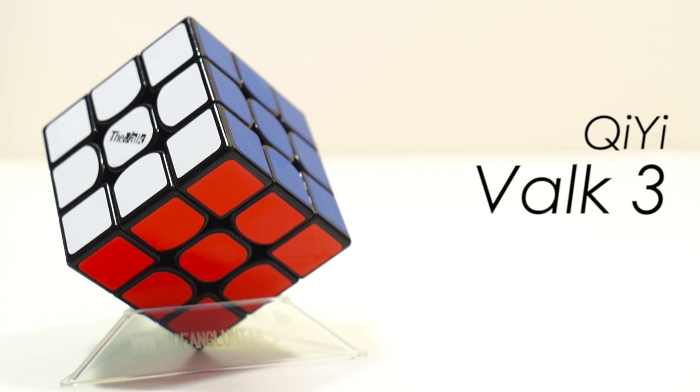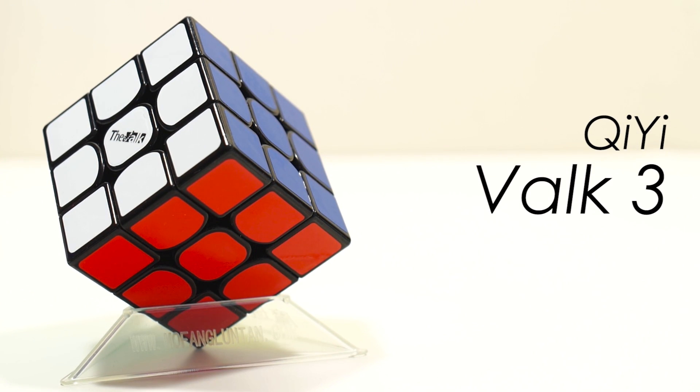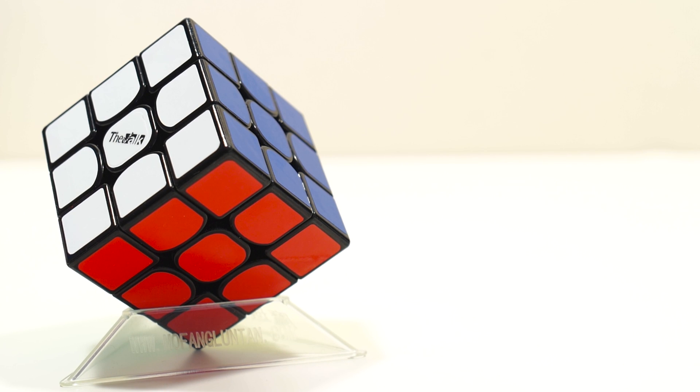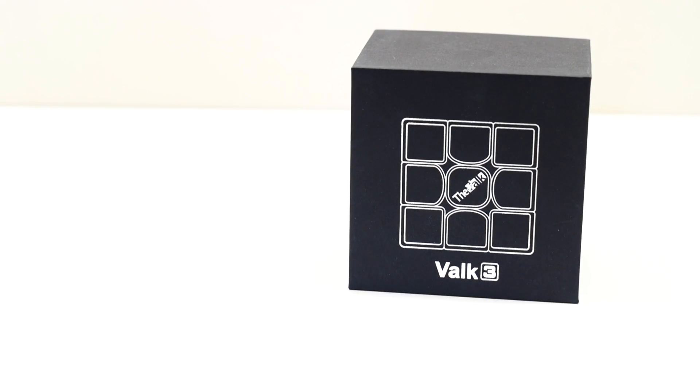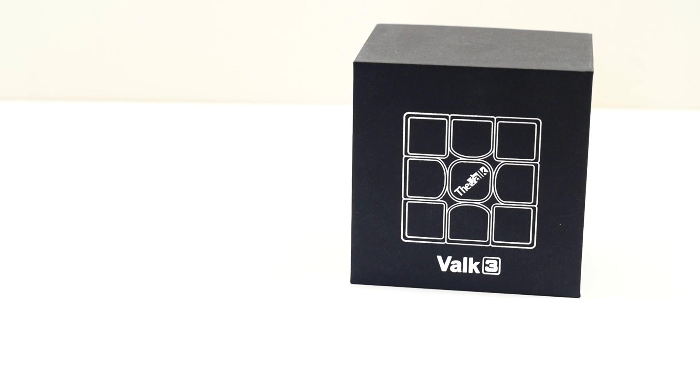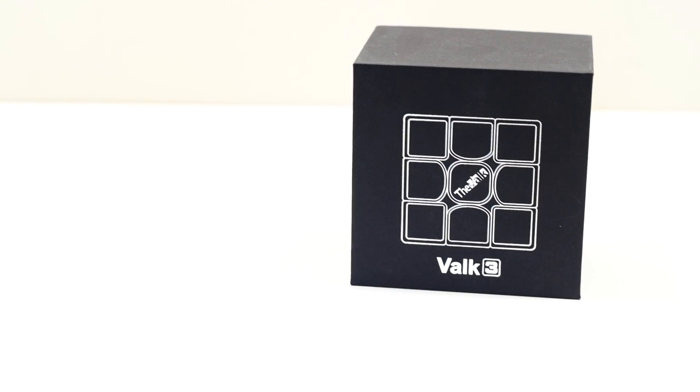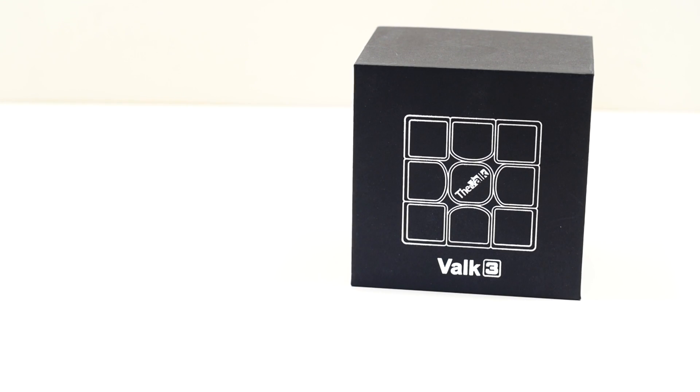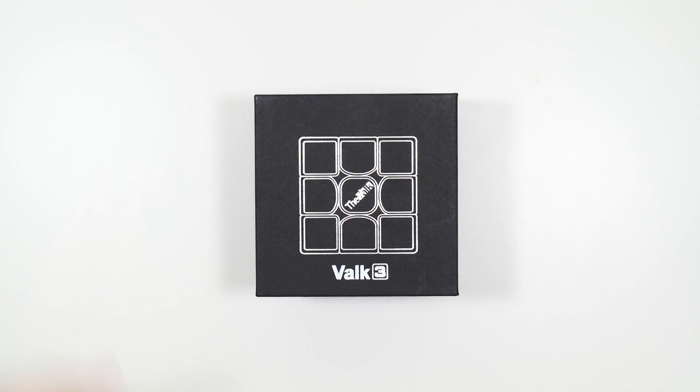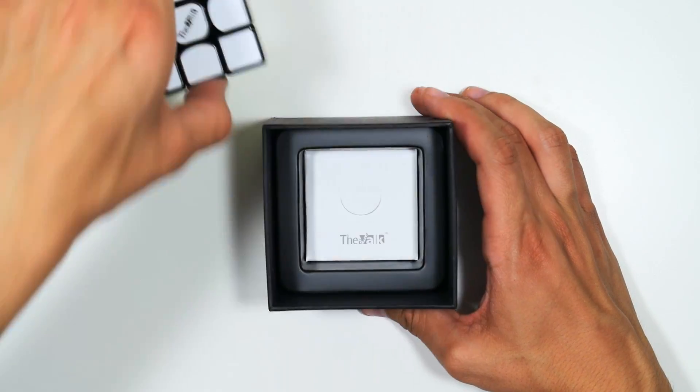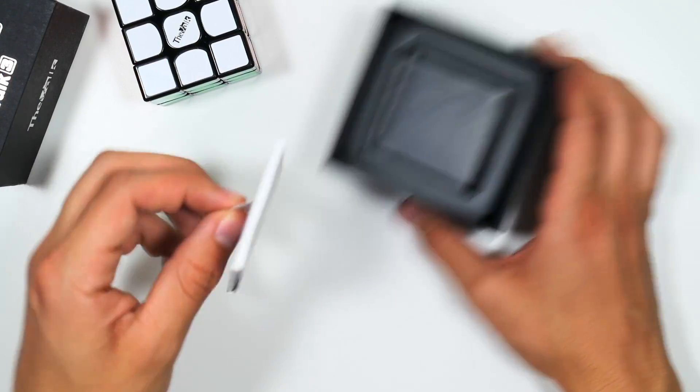Number three on this list is the always popular Valk 3. This is the flagship of QiYi MoFangGe, and it's super popular amongst pretty much all cubers. Personally, I find the feel a little boring, but I can't deny that it is a phenomenal puzzle. This cube was actually the first to come marketed in a really nice box like this. Most just came in normal retail boxes with a window, and the Valk was the first where actual effort was put into the box design.